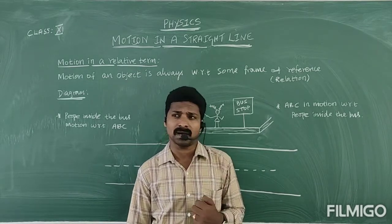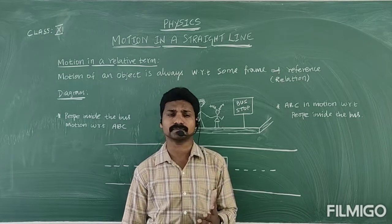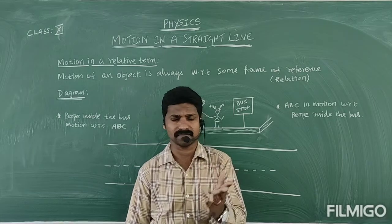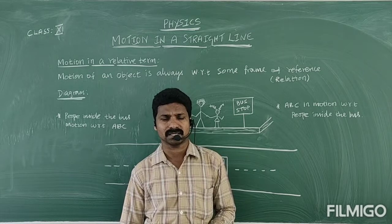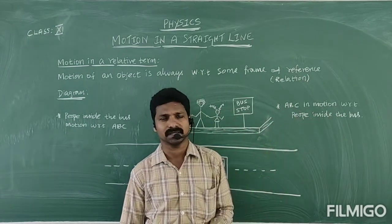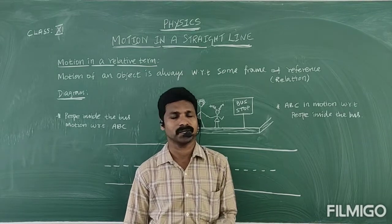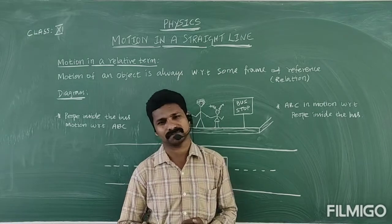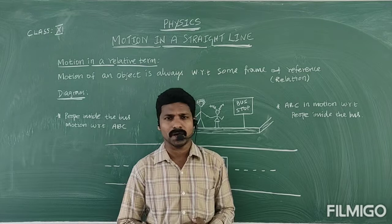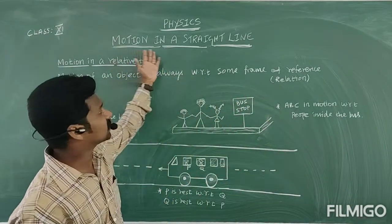Just a recap: uniform and non-uniform motion. We can say, as a definition, equal distance covered in equal intervals of time is uniform motion. Like that, you also learned distance and displacement — the difference between them. I hope that is clear.